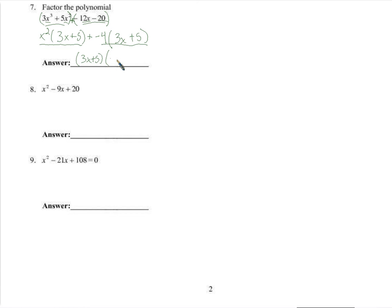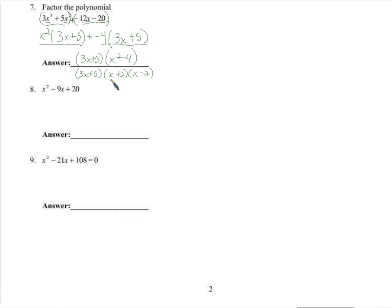Then we notice x squared minus 4 — maybe we can factor that. Indeed it is a difference of squares, which we talked about before I handed out the quest. Reminded you to look out for that difference of squares. x plus 2 times x minus 2. So that would be the final answer.